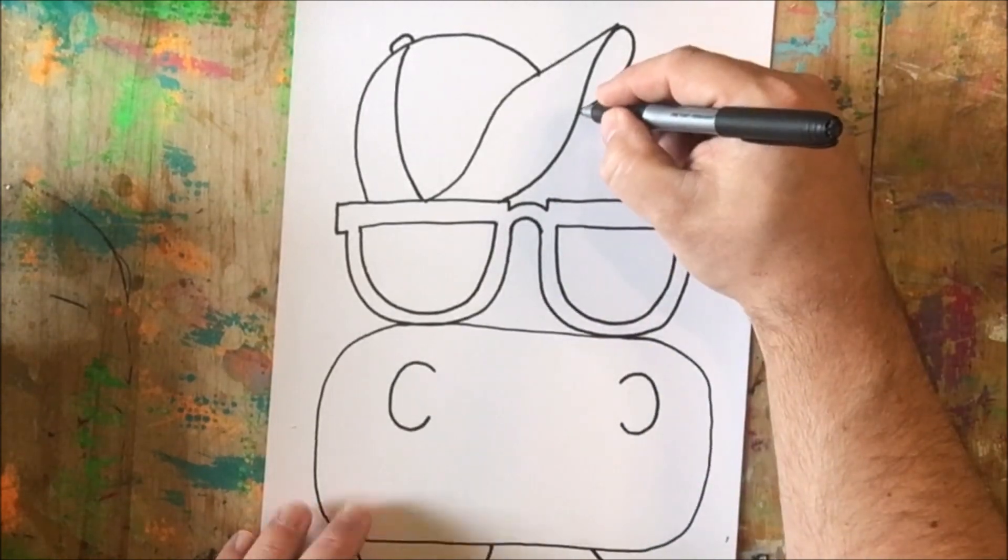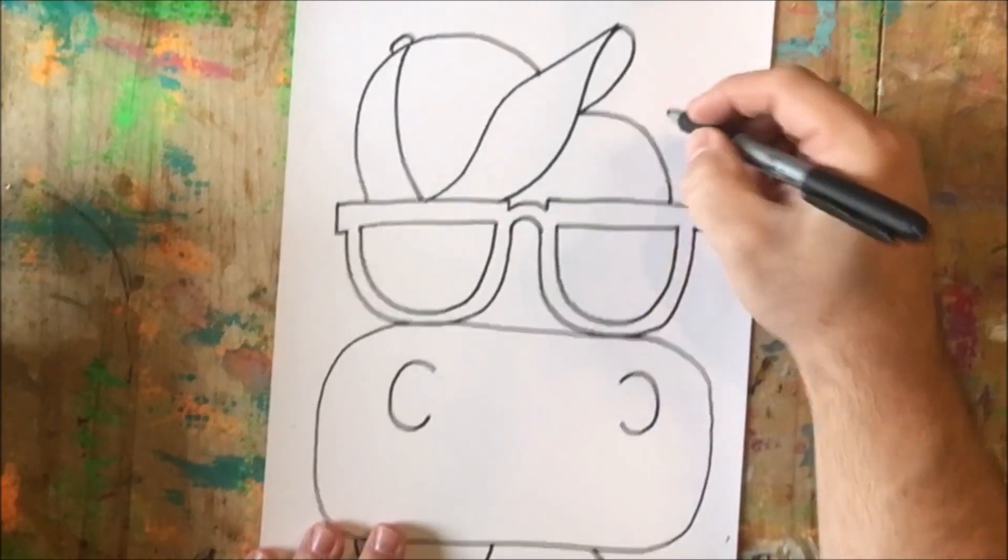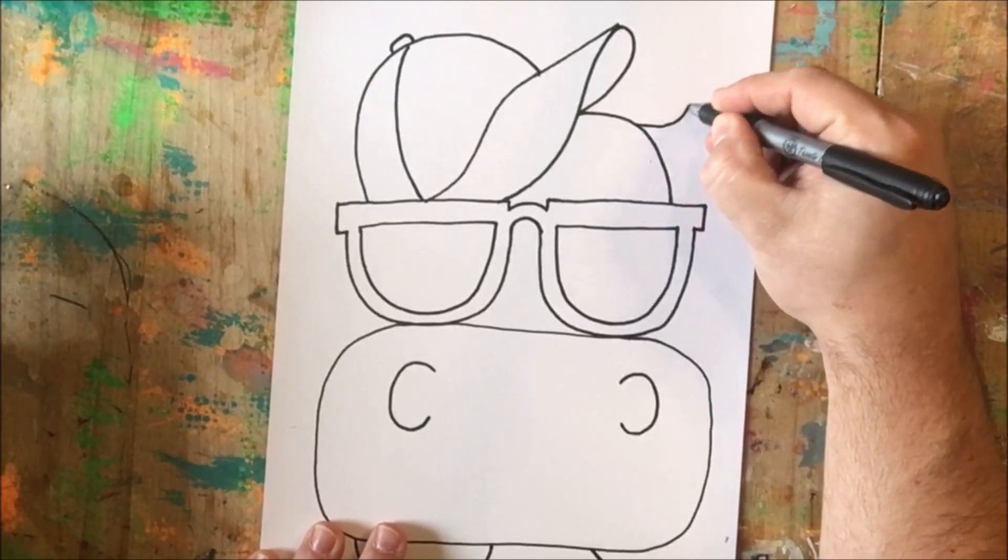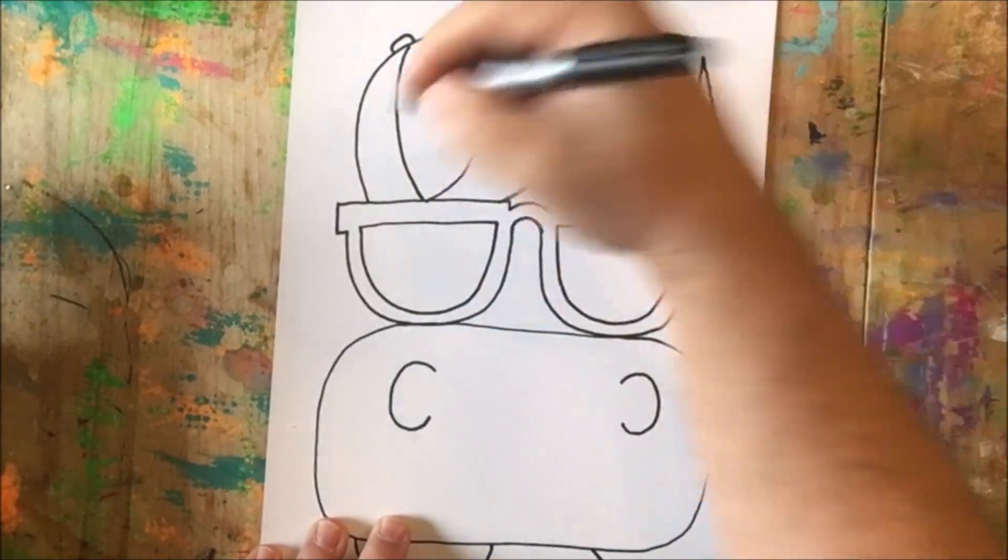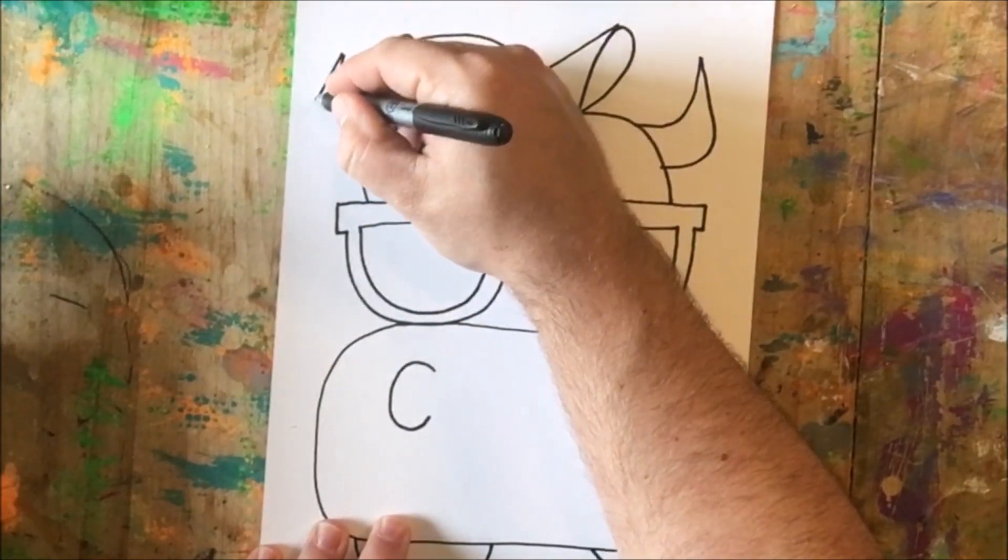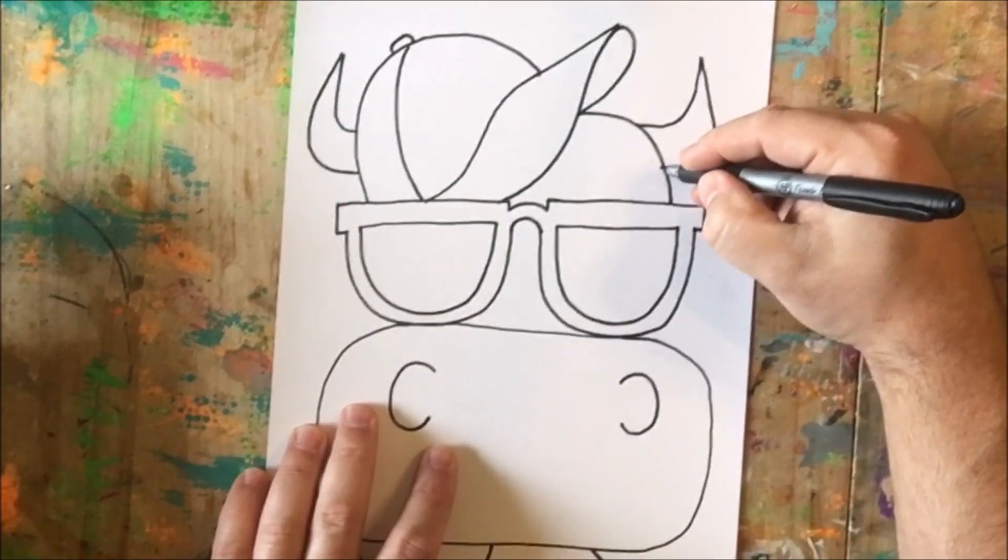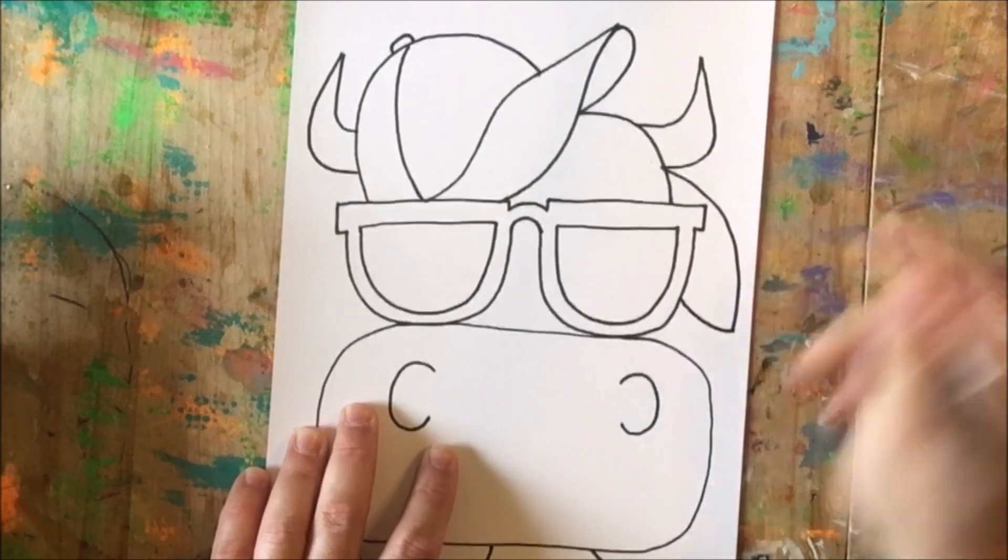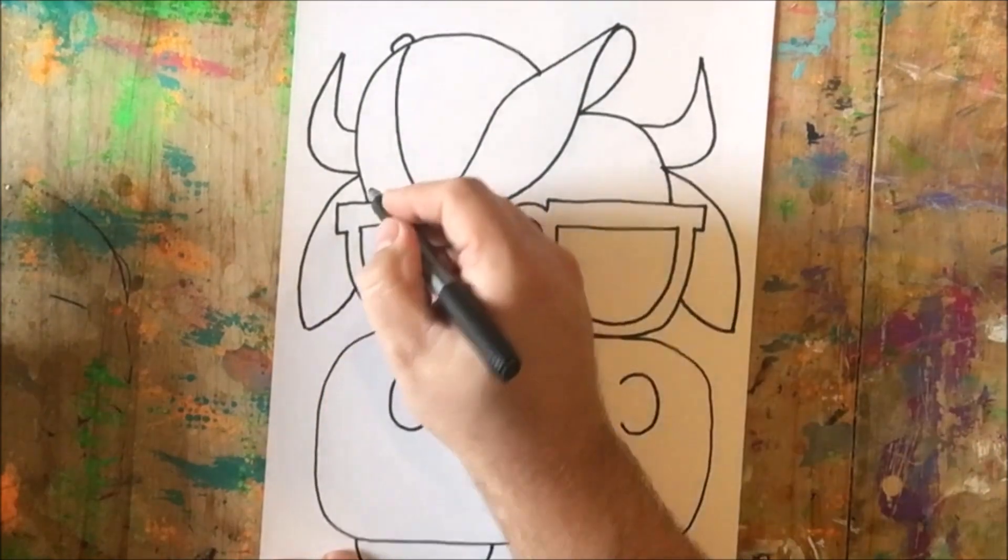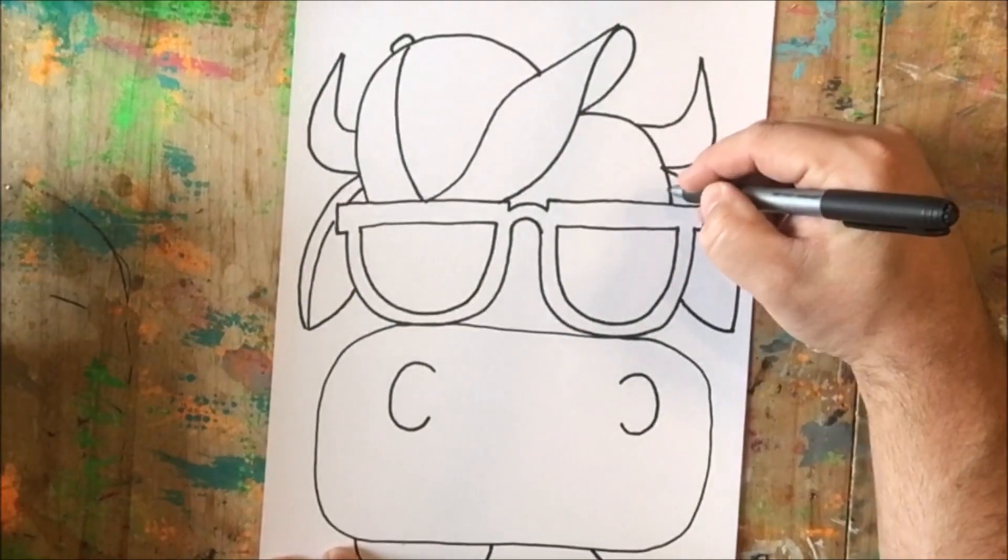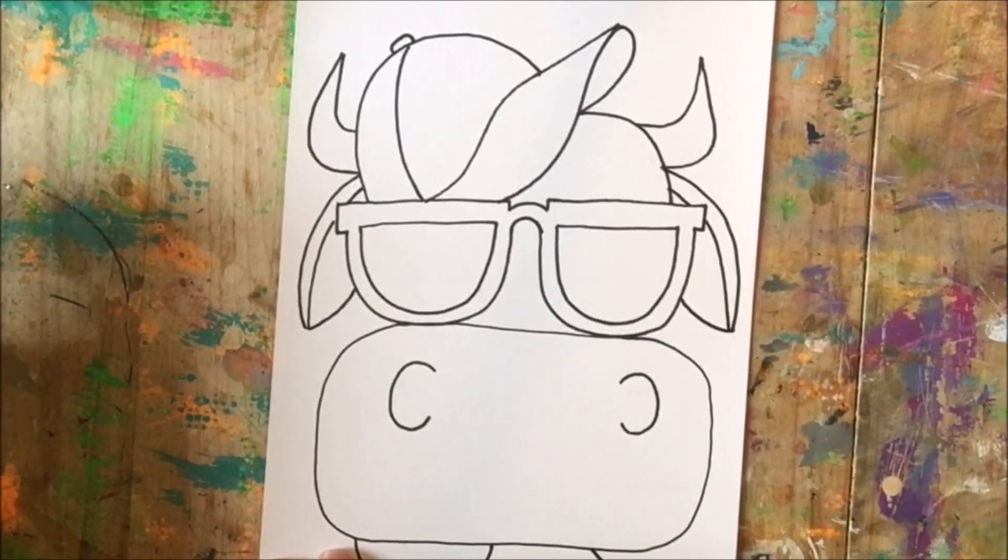Now to finish my head, all I have to do is draw a curve line that comes down here. The next thing I'm going to do is add the cow's horns. I'm going to draw a curve line that comes up and then draw a line that curves down. I'm going to repeat that on the opposite side. And then underneath my horns, I'm going to draw curve lines for my cow's ears, and I can go ahead and draw another curve line in here for the inside of the ear.